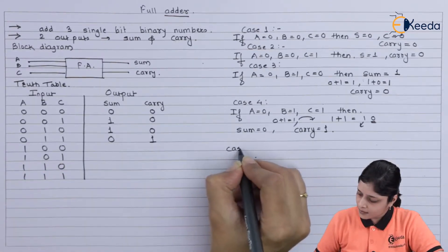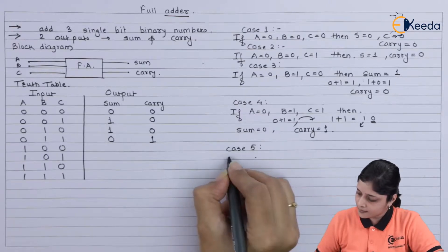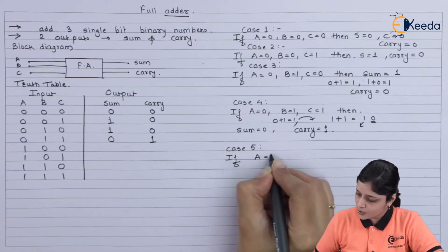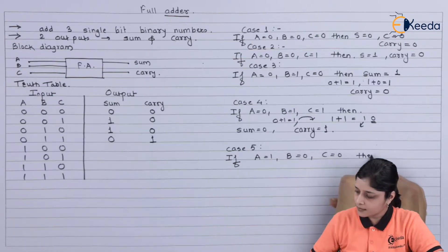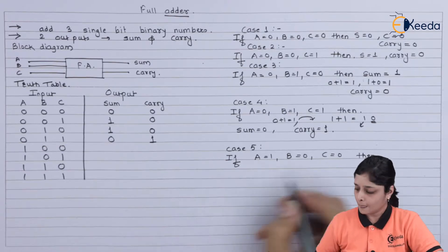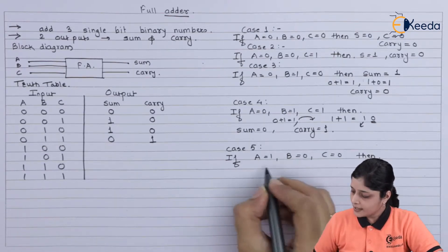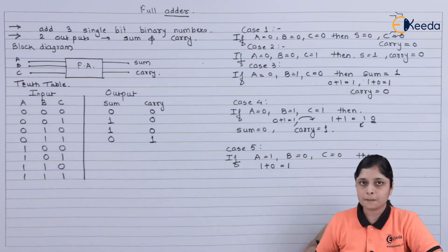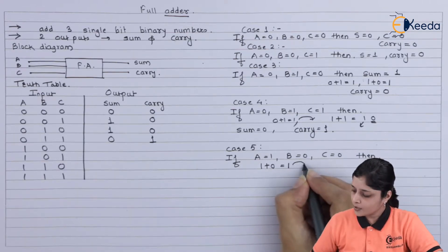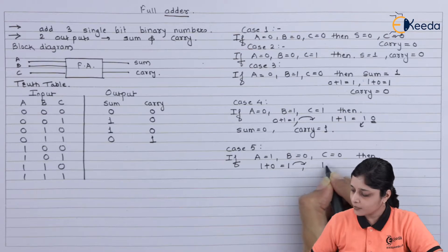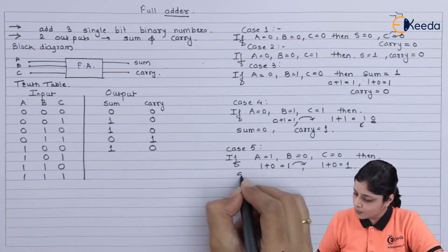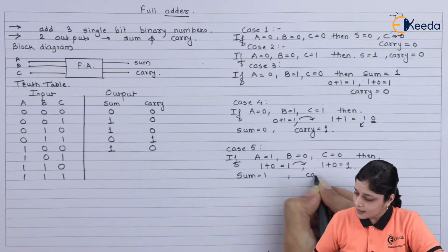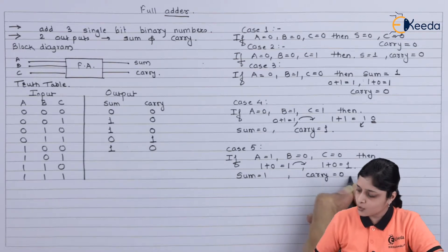Case 5: if A equals 1, B equals 0, and C equals 0, then we add 1 plus 0 to get 1, take that 1 for further process: 1 plus 0 is 1. So finally sum equals 1 and carry equals 0.